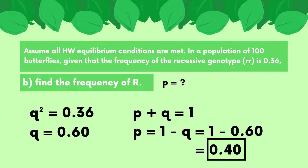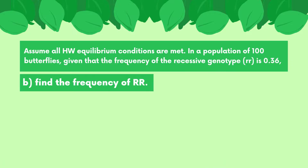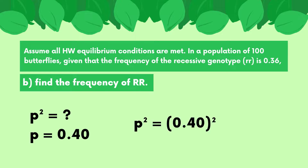Next, we need to find the frequency of the RR genotype. Based on the chart, this is the homozygous dominant genotype, which is p². We already found p to be 0.4, so all we have to do is square p to find p² = 0.16.